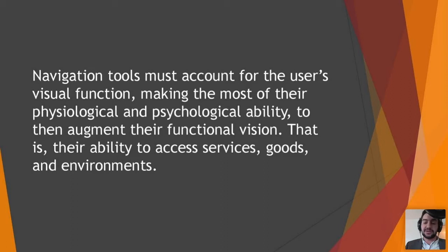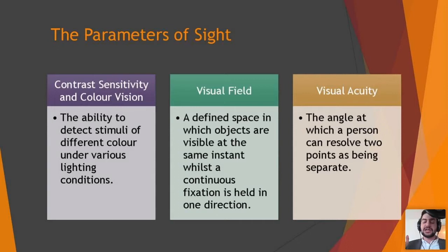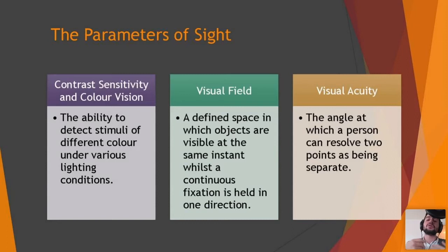Going back to visual function: the parameters of sight begin with contrast sensitivity and color vision — the ability to distinguish surfaces of different color and contrast. This is quite well understood; British Standard 8300, for instance, has provisions for LRV, light reflectance values, showing what an ideal environment needs in terms of contrast. We then have the visual field: the space in which a person can identify visual stimuli, split into central vision — the inner 30 degrees, used for reading — and peripheral vision, extending up to 100 degrees temporally. There's huge variation here: some people might have fantastic peripheral vision and no central vision, or fantastic central vision and no peripheral vision, such as myself. Finally, visual acuity — probably the most widely used parameter — is the person's ability to differentiate two points as being separate, essentially how blurry something is.